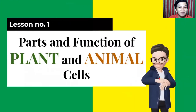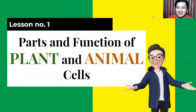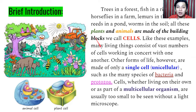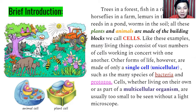For lesson number one, parts and functions of plant and animal cells. Trees in a forest, fish in a river, horse flies in a farm, lemurs in the jungle, weeds in a pond, worms in the soil — all these plants and animals are made up of building blocks we call cells.